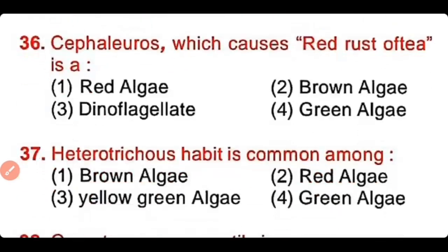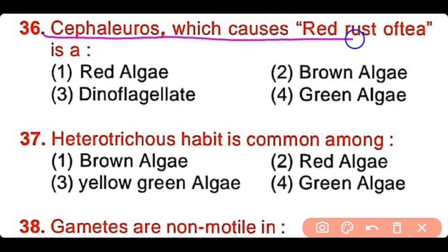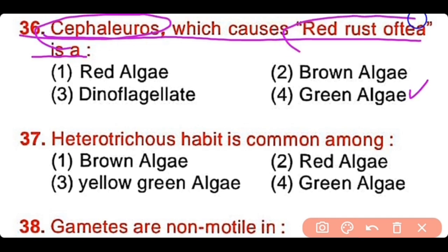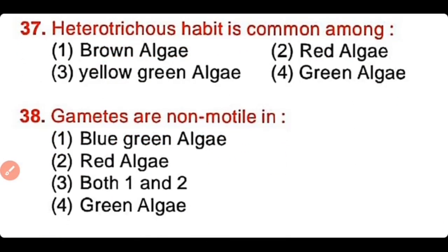Question number 36: Cephaleuros, which causes red rust of tea, is a red algae, brown algae, dinoflagellate, or green algae? The correct answer is option 4. Cephaleuros is a green algae that causes red rust of the tea plant.